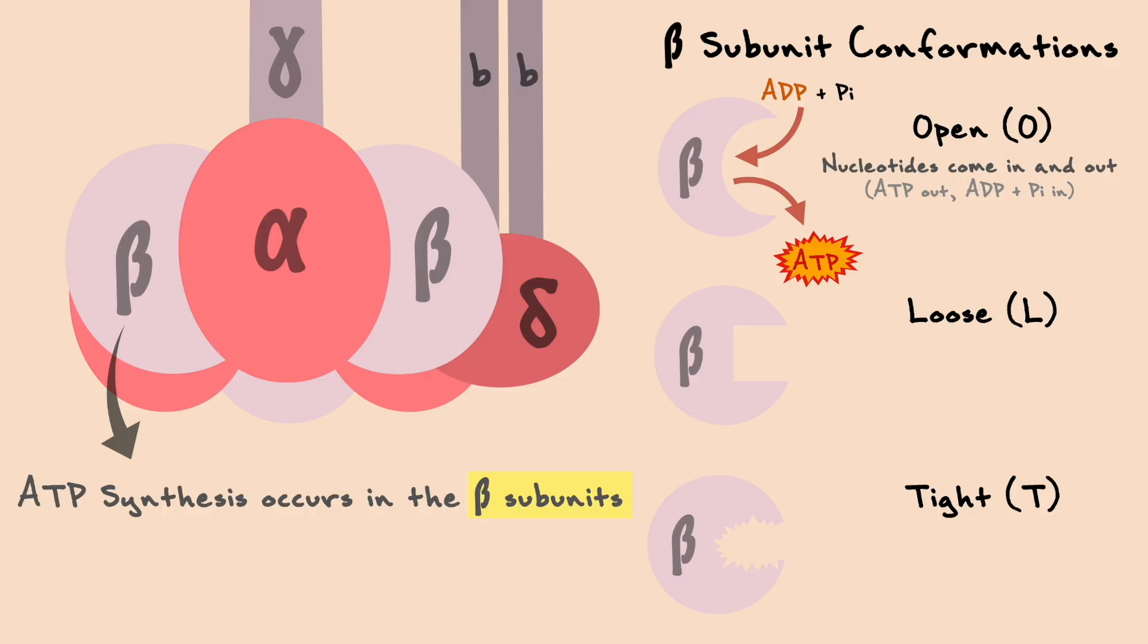In the loose conformation, the substrates are loosely bound to the beta subunit. Depending on the textbooks, you might see that ADP plus Pi can also be integrated from the loose conformation, but as you will see later, this difference does not impact the final yield.